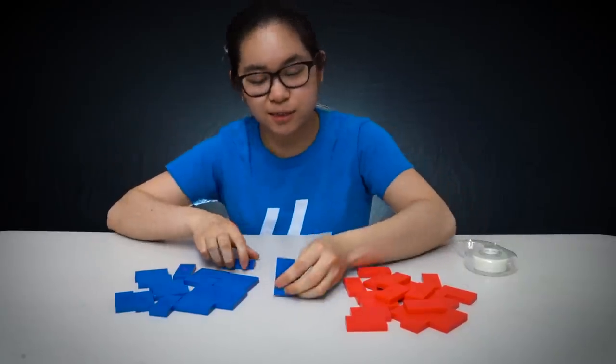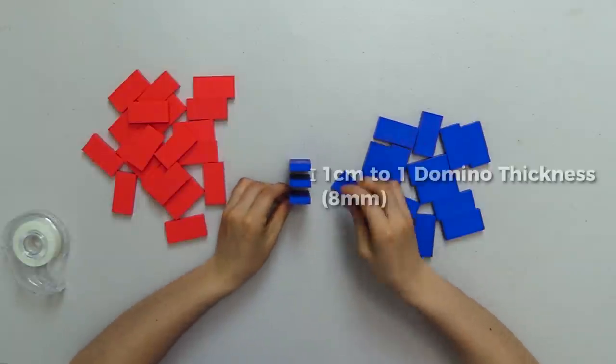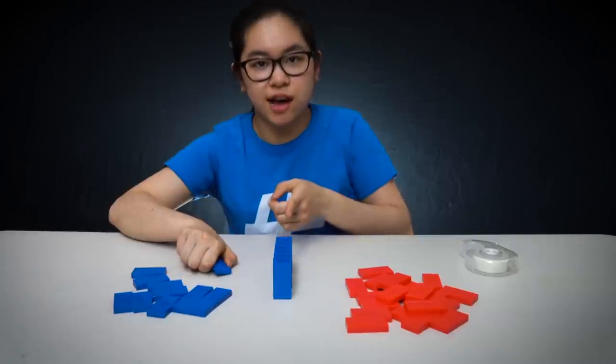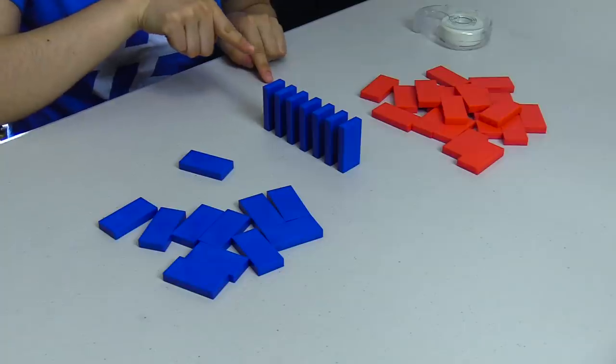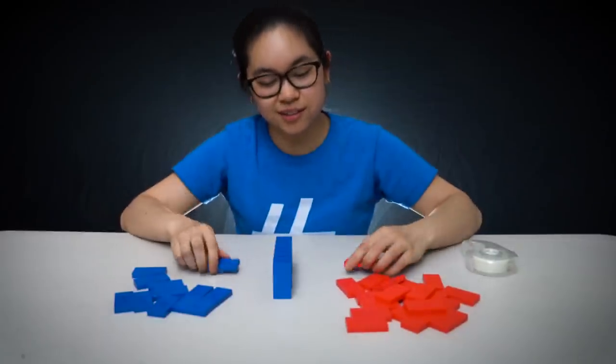I'm going to start out by just making a simple domino line. The dominoes should be about one centimeter to one domino thickness apart. Let's say this blue line is my starting line, so it's going to topple in this direction. I want it to go back in the opposite direction.